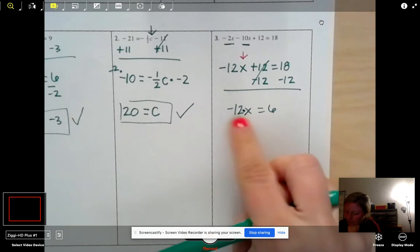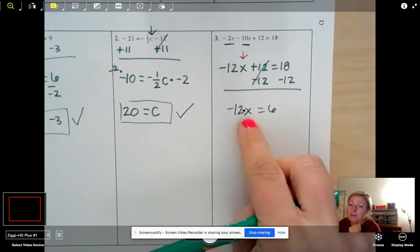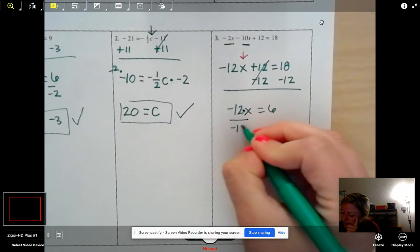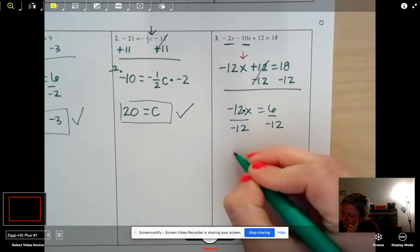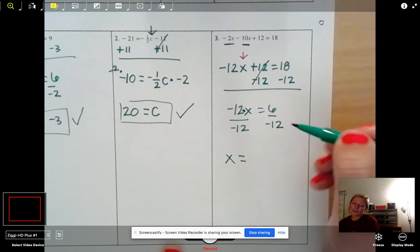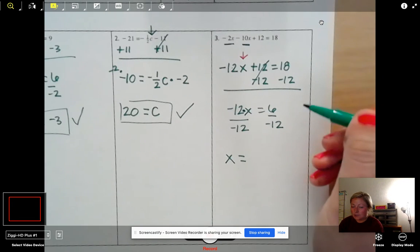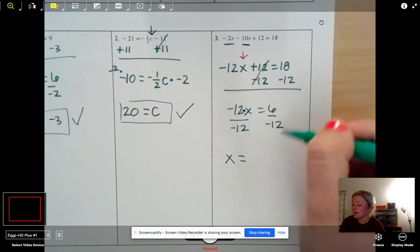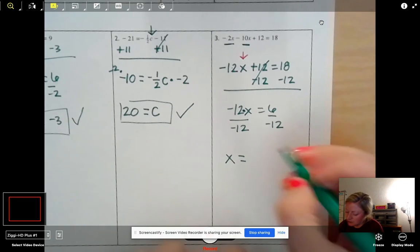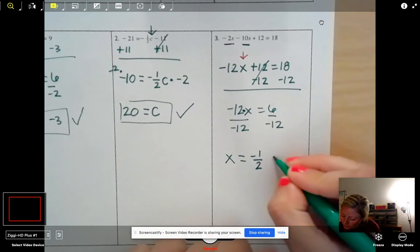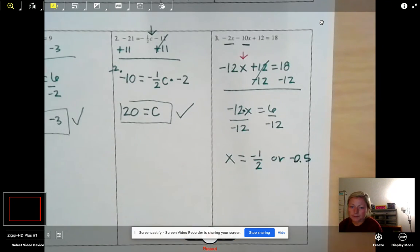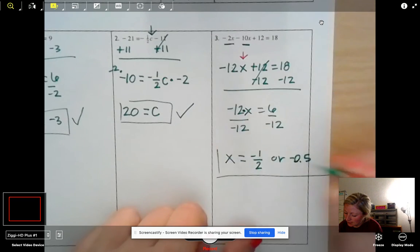Now again, when you have a number next to a variable, that means multiply. So how do I undo multiply by negative 12? Divide by negative 12. So then we find that x equals, okay, we're going to get a fraction or decimal. You could write this two ways. We can simplify. How does 6 over 12 reduce? It reduces to negative a half, right? Or we know that negative a half is really negative 0.5.